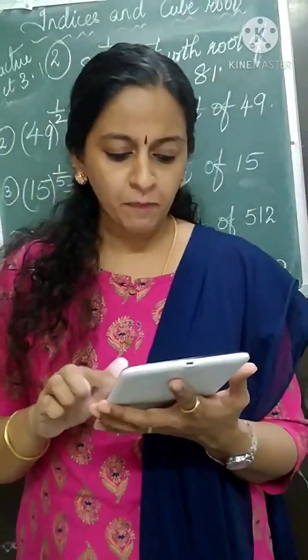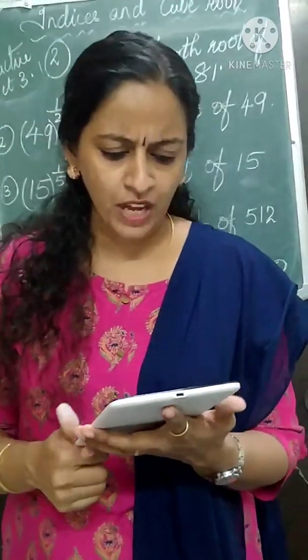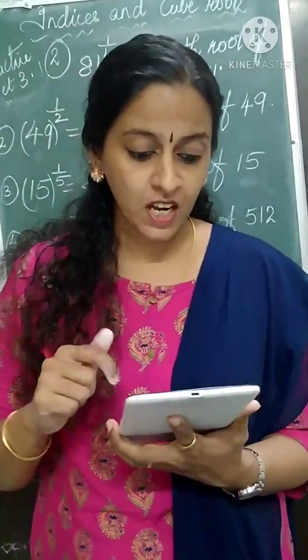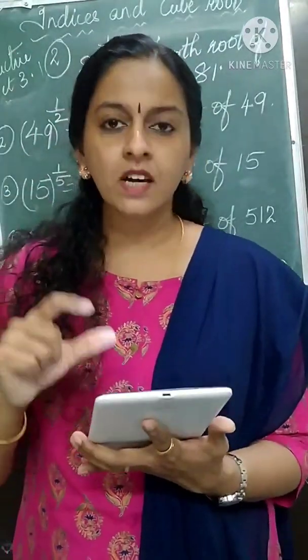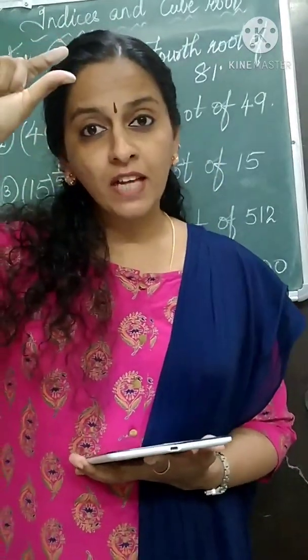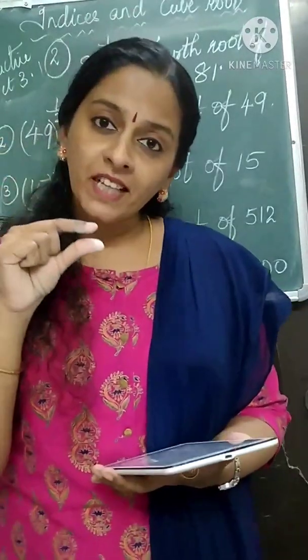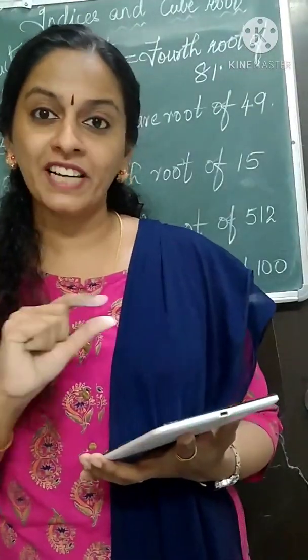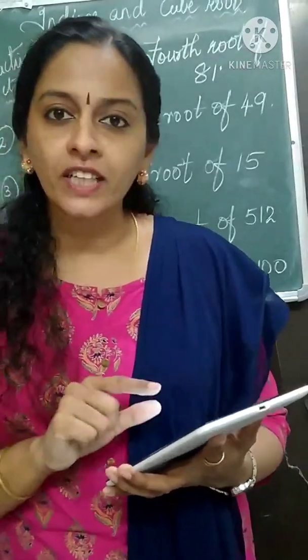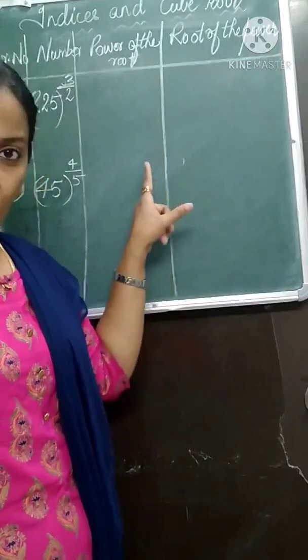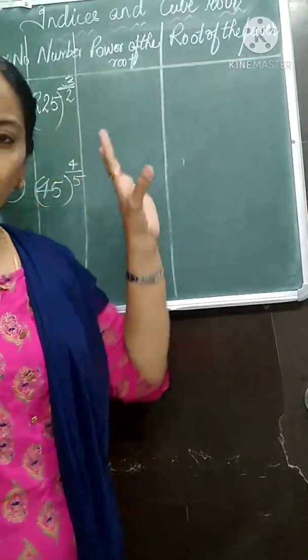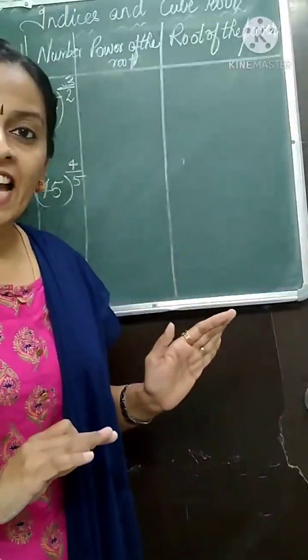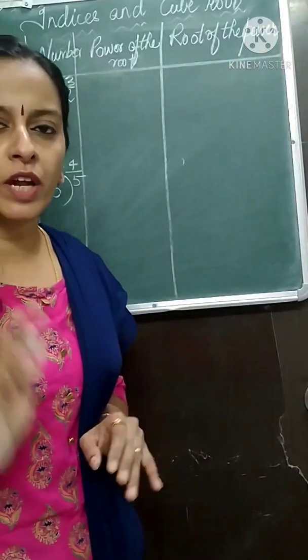Now we will start with Practice 3.2 — we will complete two practices today. See the question: complete the table. They have given numbers with columns for 'power of the root' and 'root of the power'. The number coming as numerator is called power; the number coming as denominator is called root. I have copied only two numbers due to space — we will discuss two sums and the remaining two you can do as homework.